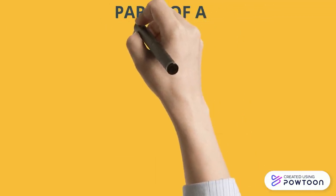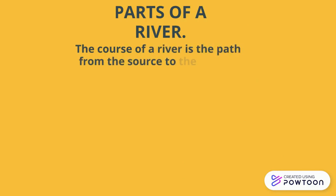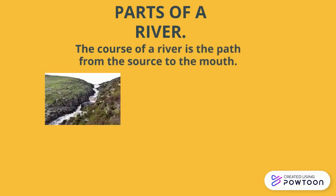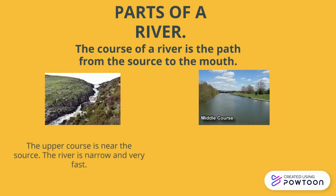Now we are going to study the parts of a river. The course of a river is the path from the source to the mouth. The upper course is near the source — the river is narrow and very fast.